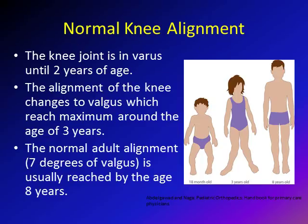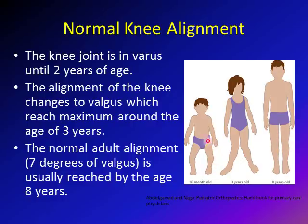Let's discuss normal knee alignment. Children have varus deformity until the age of two years. This then changes into valgus deformity, reaching a maximum around age three to four years. The valgus deformity gradually straightens until it reaches the normal adult alignment of approximately seven degrees of valgus around the age of eight years old.